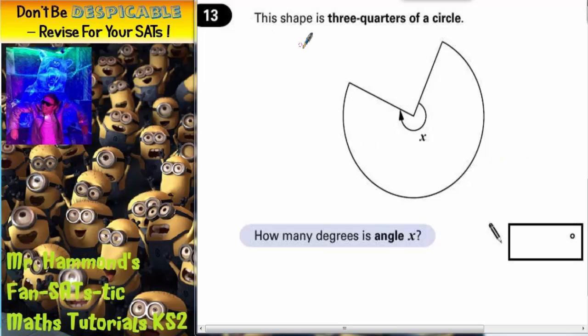Question 13. This shape is 3 quarters of a circle. How many degrees is angle x?